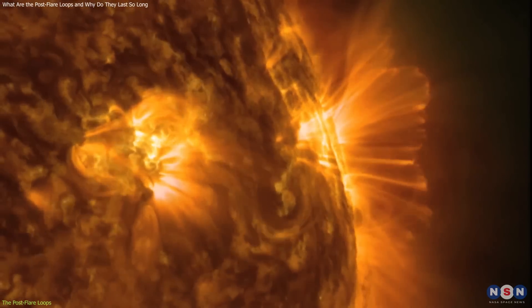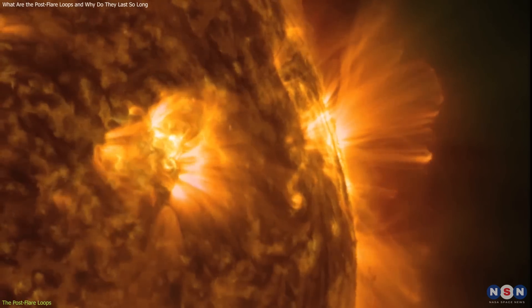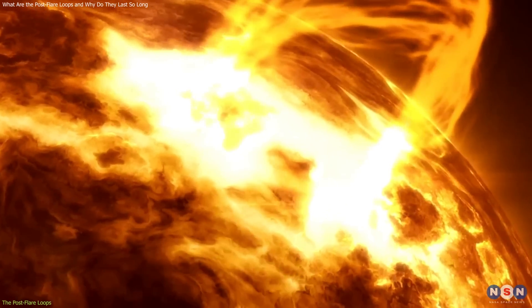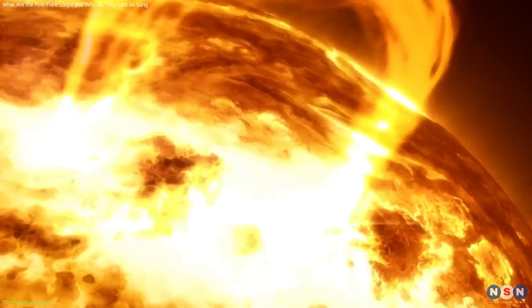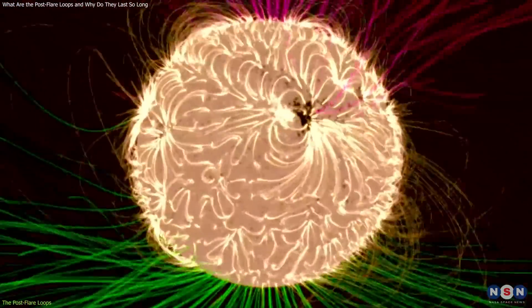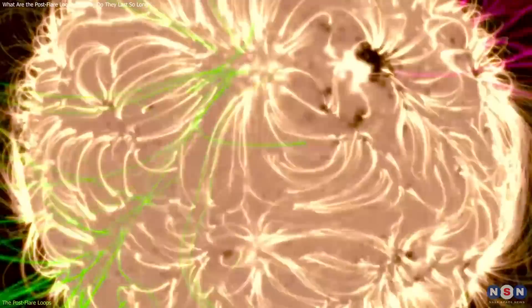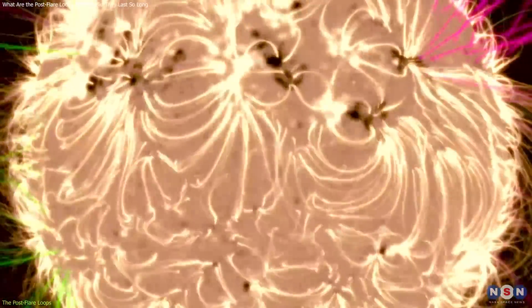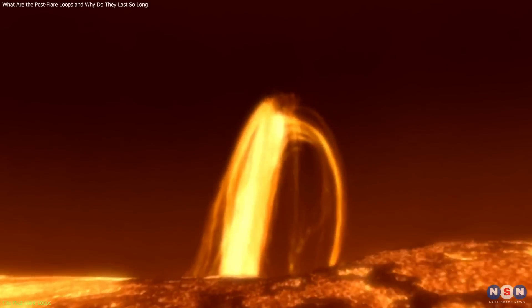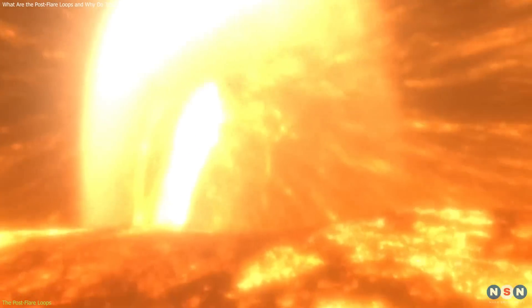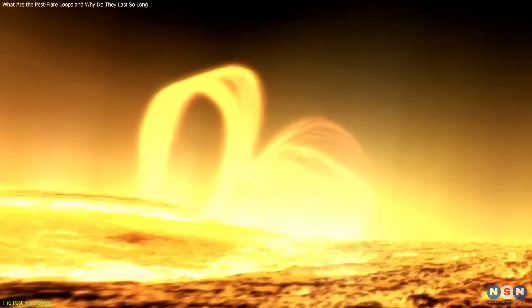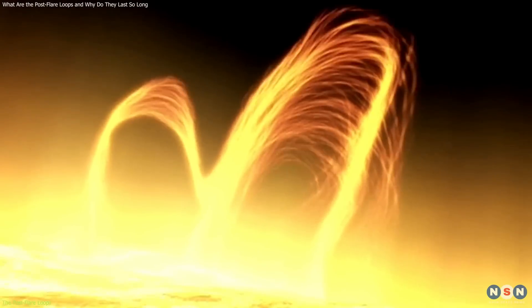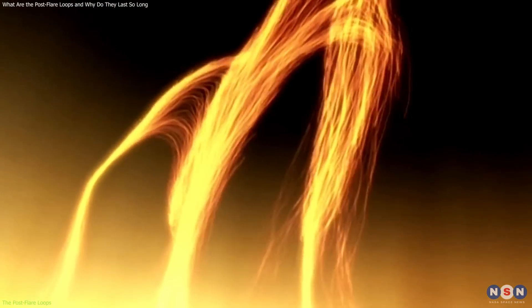This is a question that scientists are still trying to answer. One possible explanation is that the post-flare loops are the result of magnetic reconnection, which is a process that occurs when the sun's magnetic field lines break and reconnect in a different way. This can release a lot of energy and heat, creating the flare and the CME. But it can also create new magnetic loops that trap some of the plasma that was not ejected.